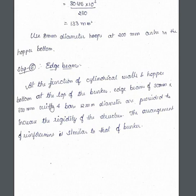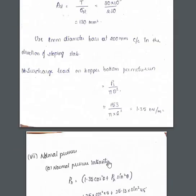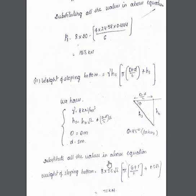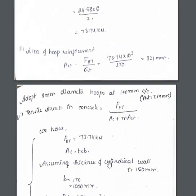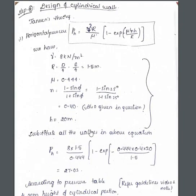Last step: edge beams at the junction of cylindrical walls and hopper bottom, and at the top of the bunker — 300 mm × 300 mm with four bars of 12 mm diameter — are provided to increase the rigidity of the structure. The arrangement of reinforcement is similar to that of a bunker. Note: for Jansen theory, a pressure table is applicable; for Rankine (Iris) theory, there is no table — you take the calculated value directly.